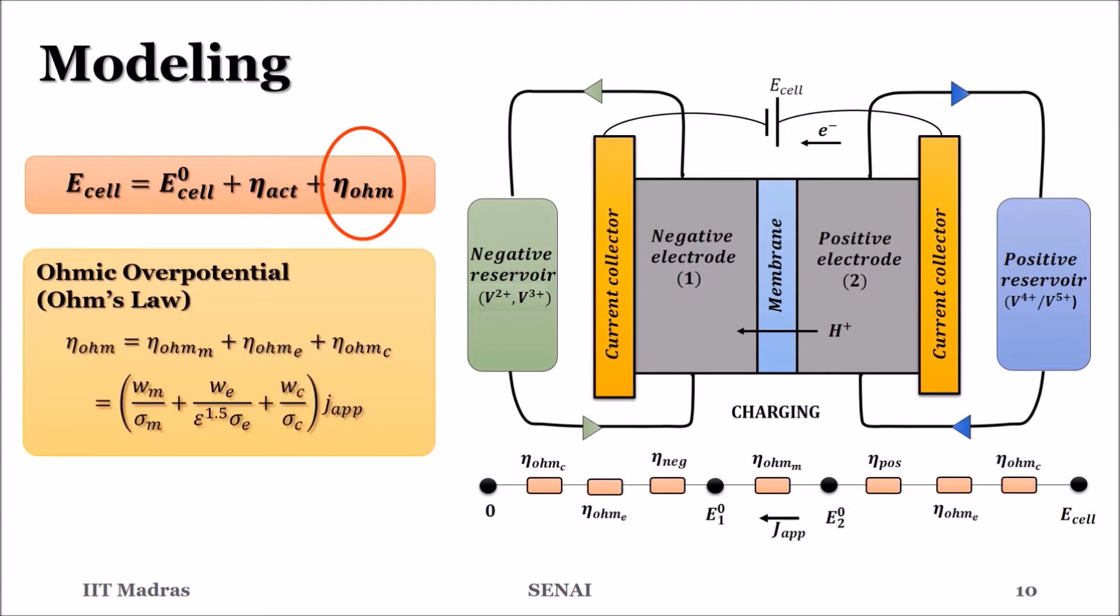Ohmic losses are the drops due to resistance to the flow of charge, which is the protons within the membrane and electrons in the electrodes and current collectors.